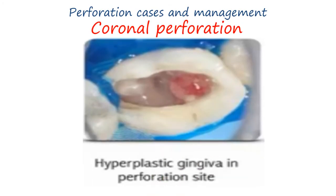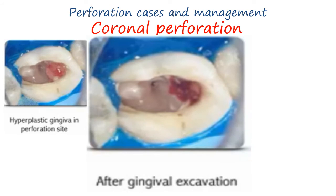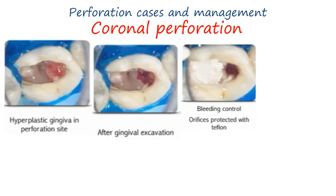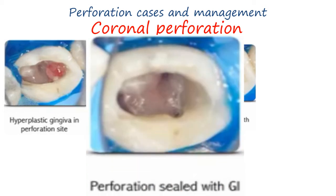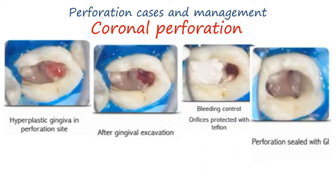Management of perforation cases: In this case we have coronal perforation with growth of gingiva inside the perforation. Cases like this require excision of the overgrowth gingiva inside the tooth, which can be done with an excavator. After that, protect the canals with Teflon. Note that MTA is not recommended in such cases — we deal with it as a carious lesion and use materials like glass ionomer and composite. Some cases of coronal perforation require crown lengthening to respect the biological width.